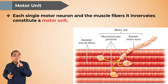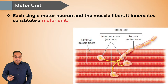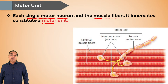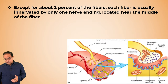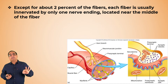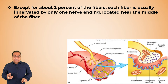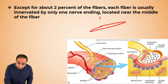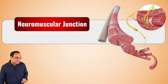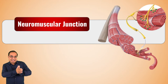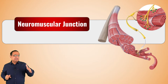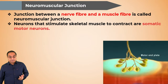A motor unit consists of a single motor neuron and all the muscle fibers it innervates. Each fiber is usually innervated by one nerve ending. To understand neuromuscular junction, you must know the basic structure of the muscle fiber — please watch the previous lecture for more detail. Now let us come to the topic: the neuromuscular junction.